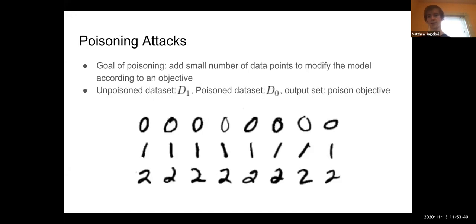Fortunately, there's this area of adversarial machine learning called poisoning attacks that does exactly this. The goal of a poisoning attack is to add a small amount of data to your dataset that will modify the model significantly according to some objective you've defined. If you have a good poisoning attack, you can set D1 to be your unpoisoned dataset, D0 to be your poisoned dataset, and then set the output set to be some threshold on the success of the poisoning attack.